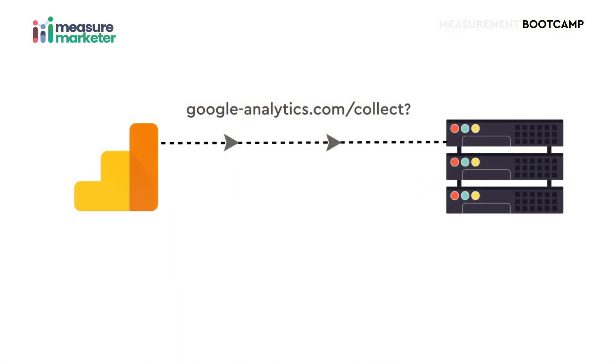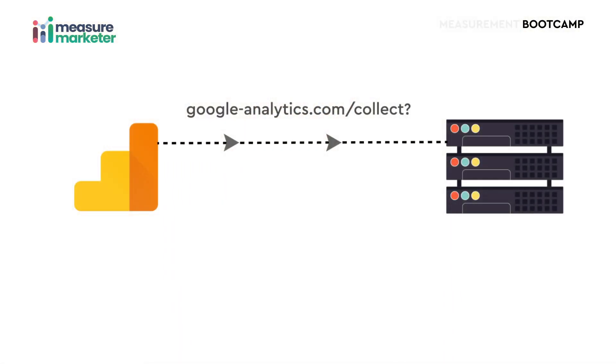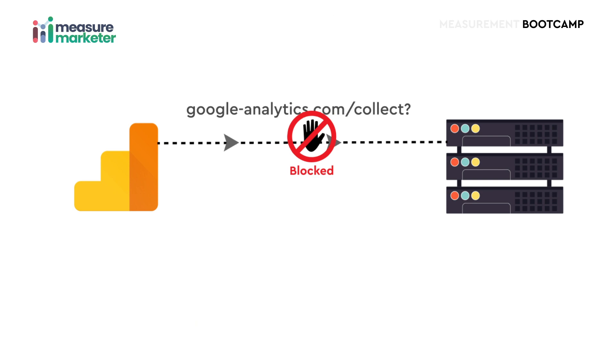But what if people visit your website and have ad blockers? The request that the Google Analytics code makes to the Google Analytics server at google-analytics.com/collect will be blocked, because it is making a request to an external third party primarily focused on tracking. Ad blockers are meant to block these kinds of external JavaScript codes which are primarily meant for tracking user behavior and activity.